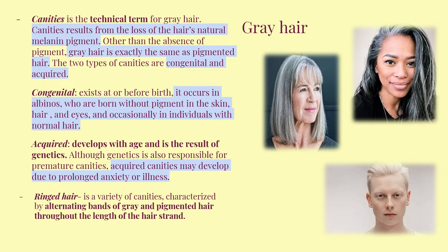Acquired canities develops with age and is a result of genetics. Although genetics is responsible for premature canities, acquired canities may also develop due to prolonged illness or anxiety. Ringed hair is a variety of gray characterized by alternating bands of gray and pigmented hair throughout the length of the hair strand.